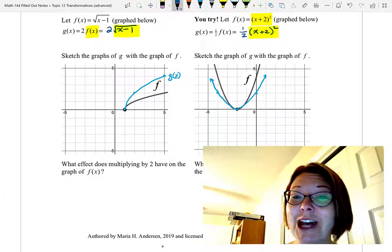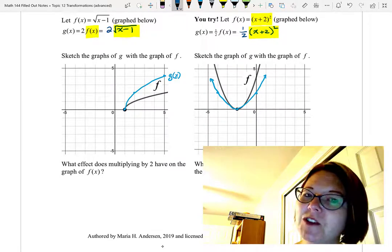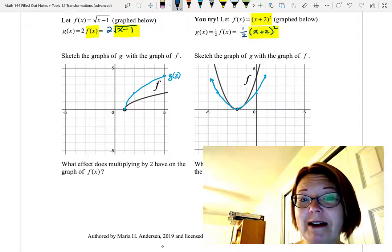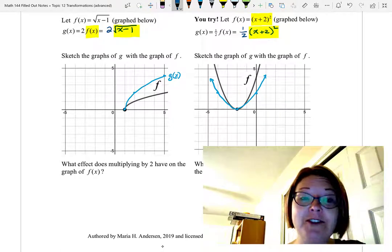Let's just stop for a second and reflect on what we've found. What effect did multiplying by 2 have on the graph of f(x)? Well, when we multiplied by 2, we stretched the graph vertically by a factor of 2.